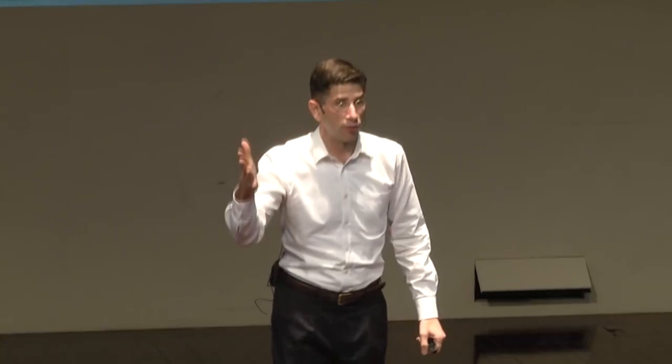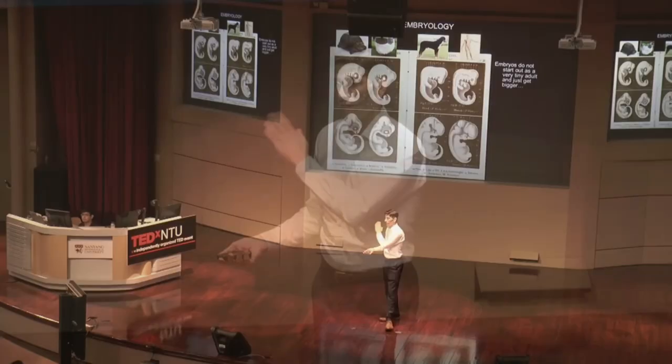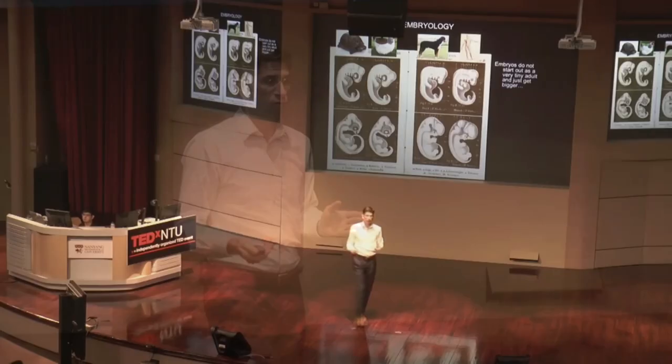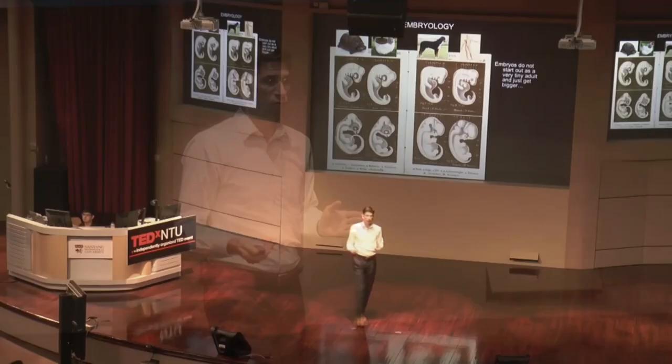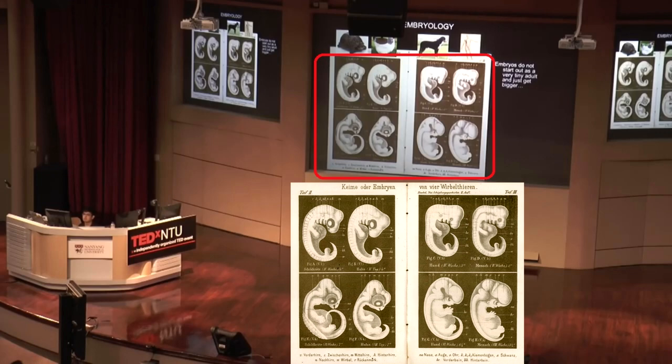The embryos of animals do not start out as little tiny adults that just get bigger and are born. Embryos go through a weird set of stages and shapes which all resemble each other, despite them being completely different adult organisms. So in this diagram, a turtle, a chicken, a dog, and a human — their embryos all look remarkably similar at the same stage. Why? Because they are related by common ancestors. Wait a minute! It's those same discredited Haeckel embryo drawings. And you're telling us that this is how you know that evolution is true? Fake drawings? I don't think so, Dr. John!